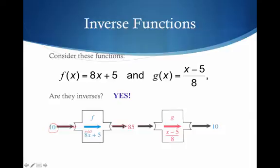Now I take this 85, and let's send it into G. We're composing functions here, guys. So I send 85 into G. So I get 85 minus 5, which is 80, divided by 8, which is 10. Aha. And you can see I get, in the end, exactly what I started with.